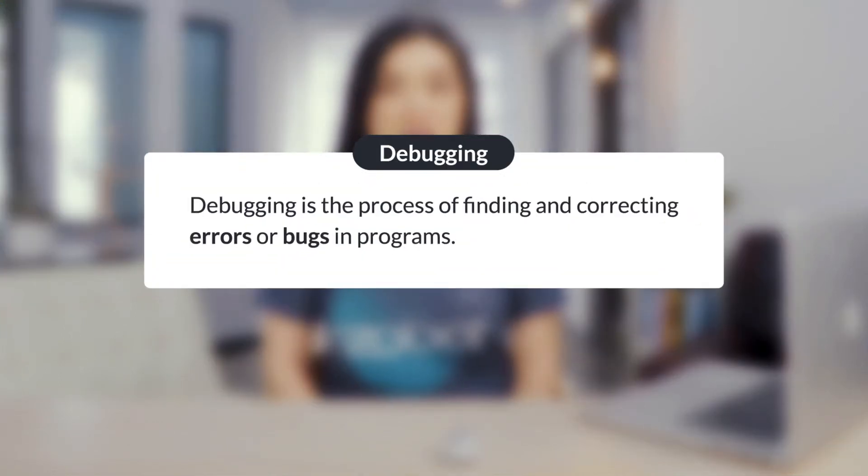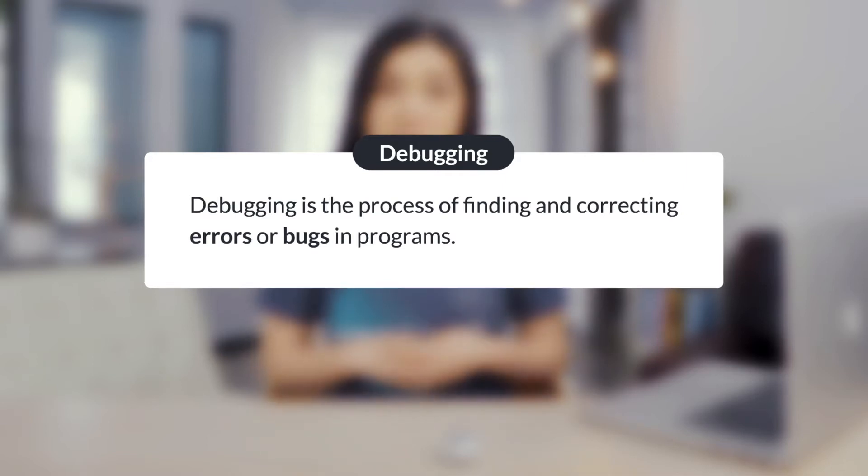Programmers often have bugs or errors in their code. A bug occurs when a program runs and the bot does not do what it is supposed to do. To fix these bugs, programmers debug. Debugging is the process of finding and correcting errors or bugs in a program.